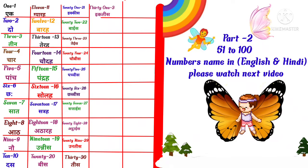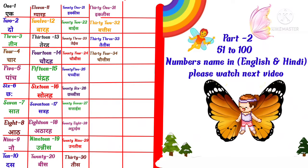31 means thirty-one. T-H-I-R-T-Y T-W-O, 32 means thirty-two. T-H-I-R-T-Y F-O-U-R, 34 means thirty-four.